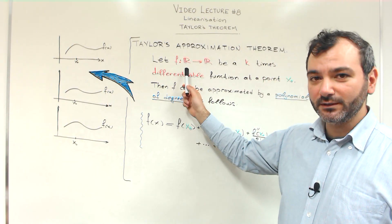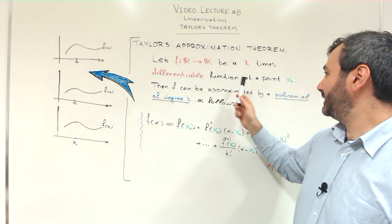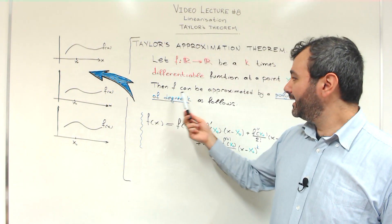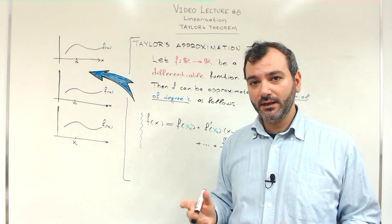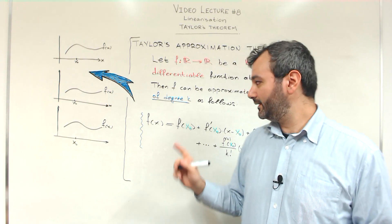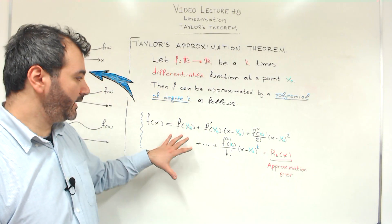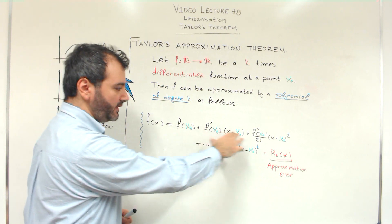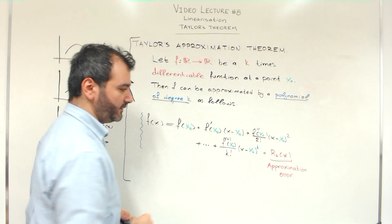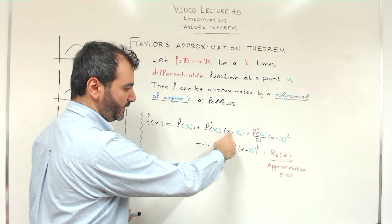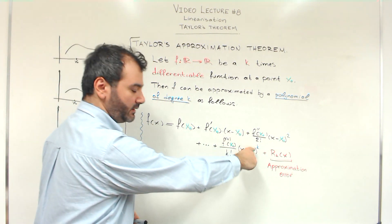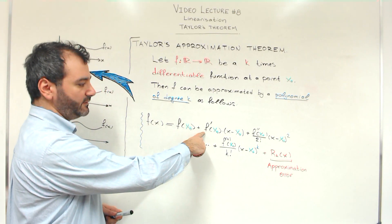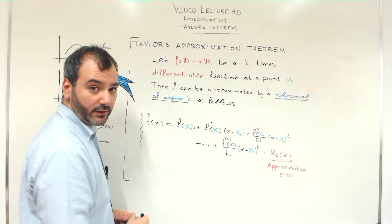Taylor's theorem states the following. If we have a function of one variable that is k times differentiable at a point x0 — so we have a function that at a point is sufficiently smooth — then this function can be approximated around this point by a polynomial of degree k. The approximation involves the function and its derivatives up to order k, with terms of the form (x − x0), (x − x0) squared, up to (x − x0)^k, divided by 1, 2 factorial, 3 factorial, up to k factorial.